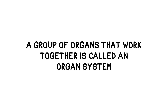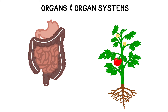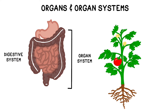A group of organs that work together is called an organ system. In humans, a familiar example might be the digestive system, where many organs work together to obtain energy from food. In plants, the so-called shoot system involves many structures like stems, branches, and leaves, which collaborate to allow the plant to harvest energy from the sun.